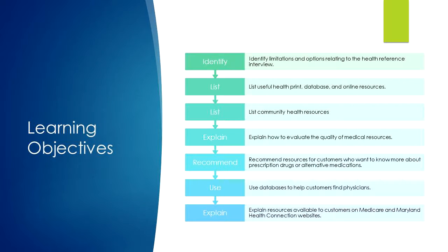Our learning objectives for this module are to identify limitations and options related to the health reference interview, list print database and online health resources, list community health resources, explain how to evaluate the quality of medical resources, recommend resources for customers who want to know more about prescription drugs or alternative medications, use databases to help customers find physicians, and explain resources available to customers on Medicare and Maryland Health Connection websites.